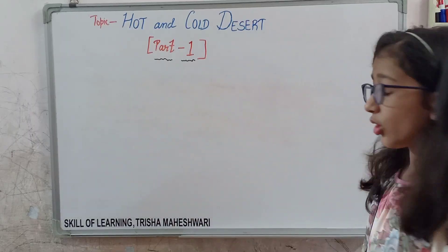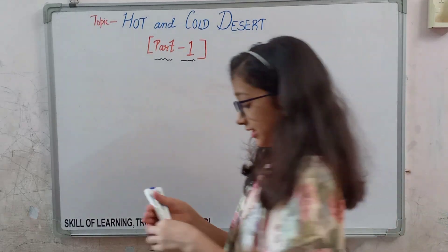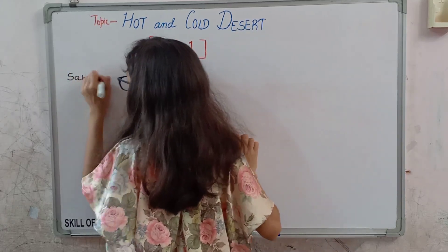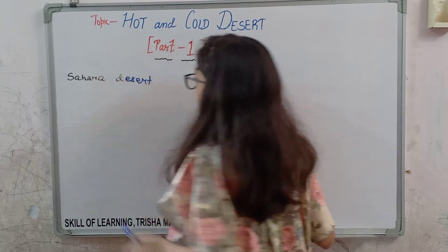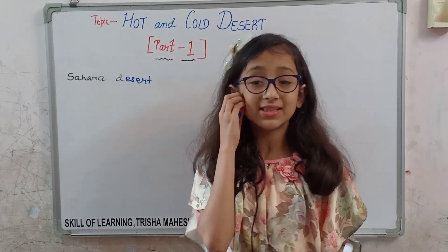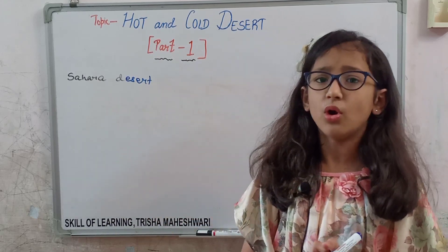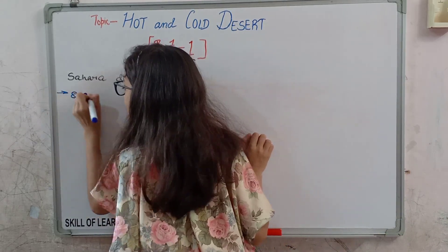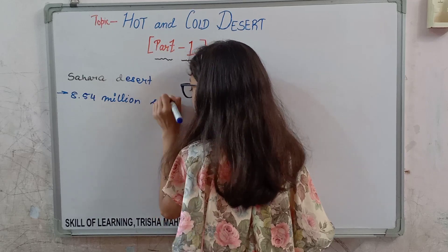If we talk about the largest, the biggest hot desert in the world, that is the Sahara Desert. This is not strictly in the chapter, but I thought to tell you because it is very informative and you will love it. The Sahara Desert is about 8.54 million square kilometers in size.